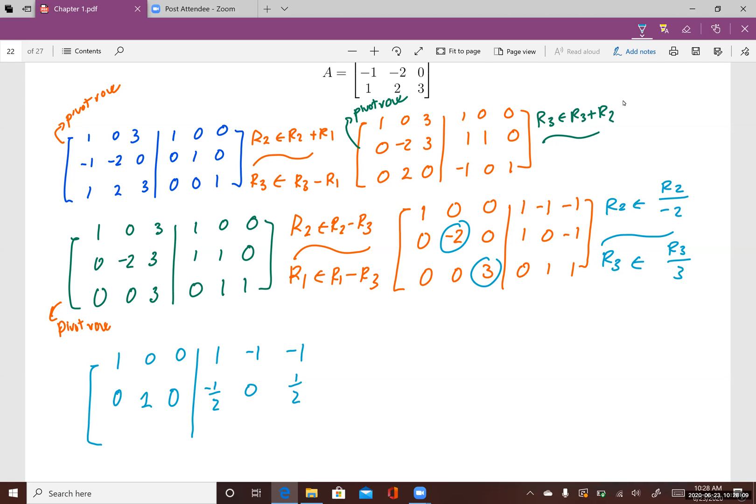Row 3 will be 0, 0, 1, which is what we want. And this will be 0, then 1 third, and this is 1 third.